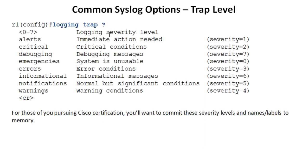So here again is the command. It's logging trap, and then we've invoked the Cisco IOS help with the question mark. You can see you can either put in the levels numerically, zero through seven, or you can put in the word. It shows what keywords correspond, so you don't have to memorize that emergencies equals zero or errors equals three — it'll show you in the output of the command.